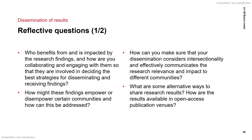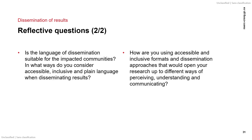Finally, when you are disseminating your results, you could consider questions like: Who benefits from and is impacted by the research findings? And how are you collaborating and engaging with them so that they are involved in deciding the best strategies for disseminating and receiving findings? How might these findings empower or disempower certain communities and how can this be addressed? How can you make sure that your dissemination considers intersectionality and effectively communicates the research relevance and impact to different communities? What are some alternative ways to share research results? How are the results available in open access publication venues? Is the language of dissemination suitable for the impacted communities? In what ways do you consider accessible, inclusive, and plain language when disseminating results? How are you using accessible and inclusive formats and dissemination approaches that would open your research up to different ways of perceiving, understanding, and communicating?